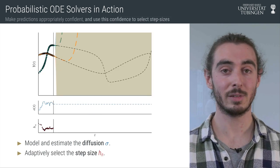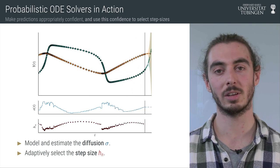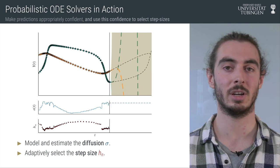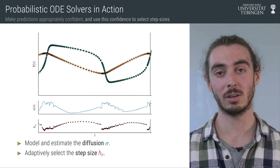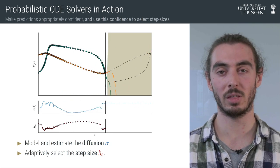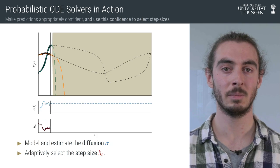And now that we have calibrated uncertainty estimates, we can also use the probabilistic model to compute estimates of the local approximation error. And similarly to classic ODE solvers, we can use these local errors with control algorithms to adaptively select the step size of the solver.